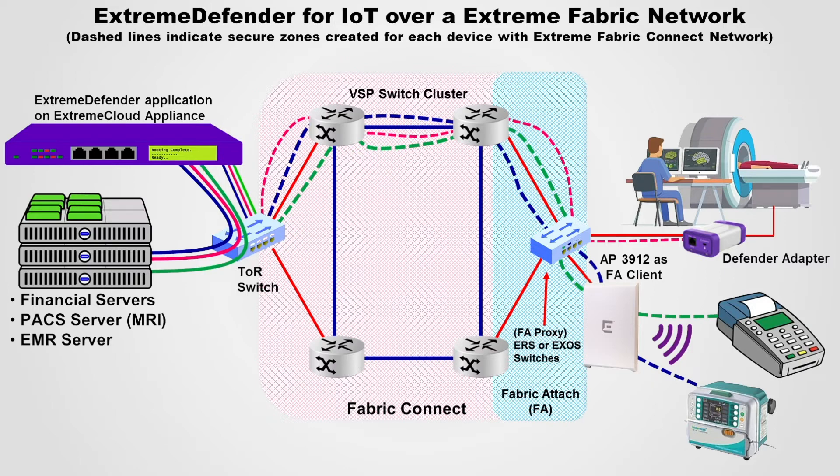The fabric connect also supports an auto-attach protocol called fabric attach. This enables dynamic auto-attach of endpoints as well as full network service automation. An end-to-end secure zone is created dynamically as soon as an end device is plugged in.